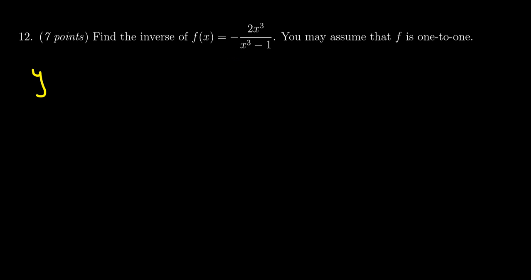So remember the business with the inverse function. I'm going to remove the notation f of x and actually think of the variables x and y right here. So we have y equals negative 2x cubed over x cubed minus 1. This, of course, gives us the graph of f.